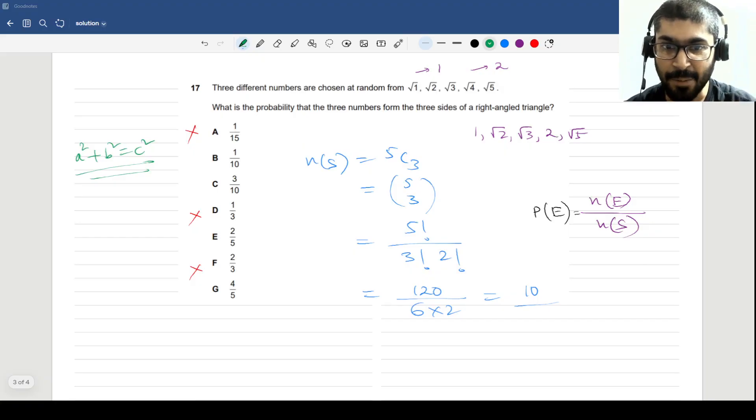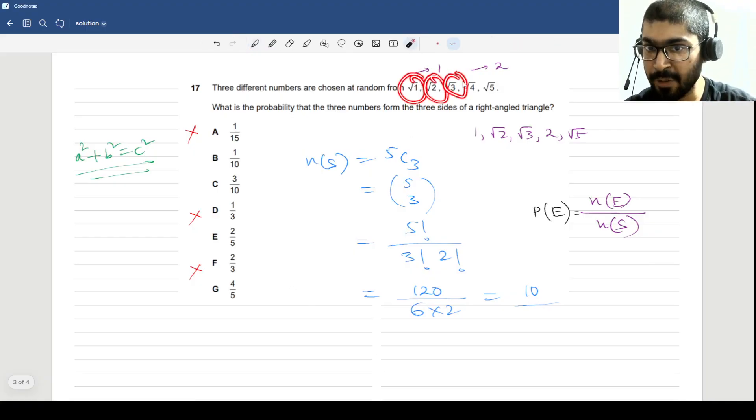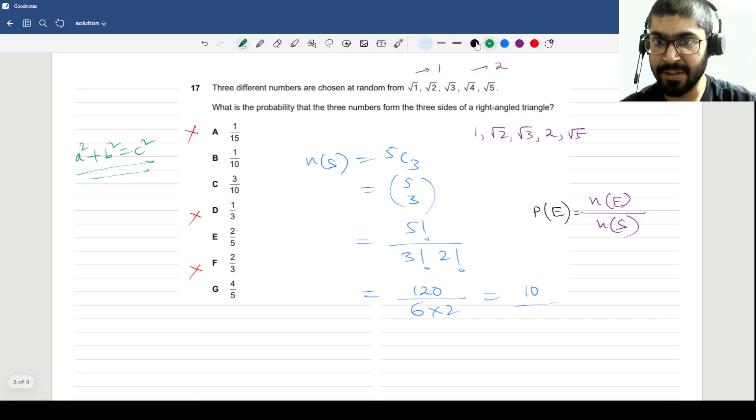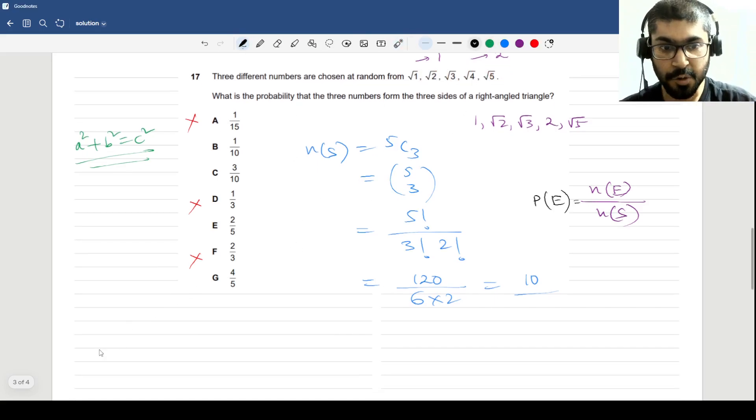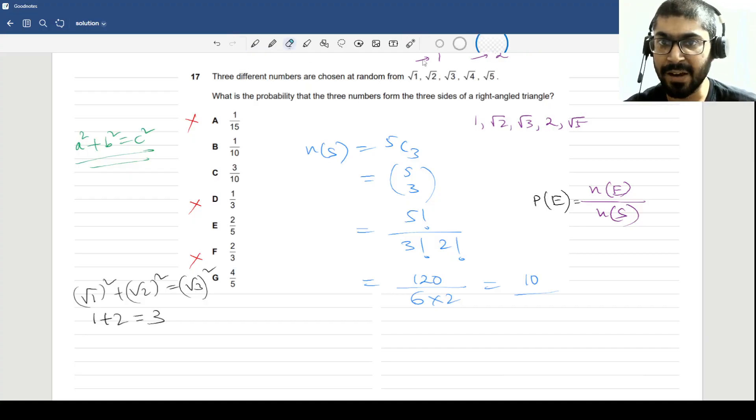Now here the numbers are given in their square root format. Their squares will be the numbers itself—1, 2, 3, 4, and 5. So we will just have to check how many additions will lead to the numbers that we desire. The first one is 1 + 2 = 3.